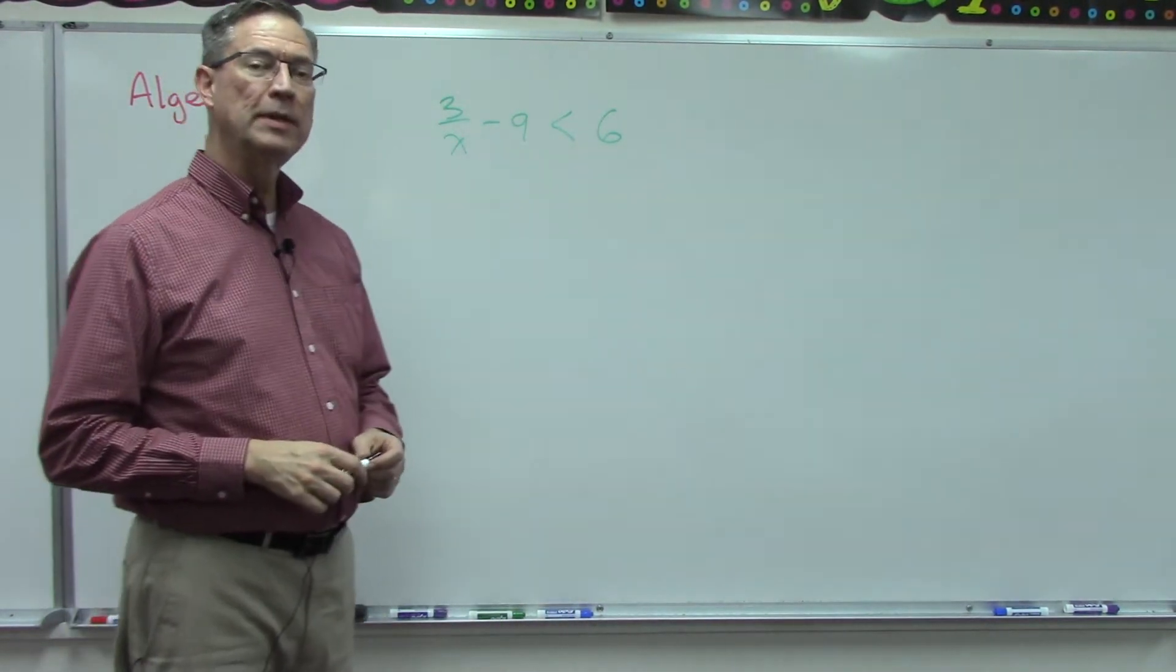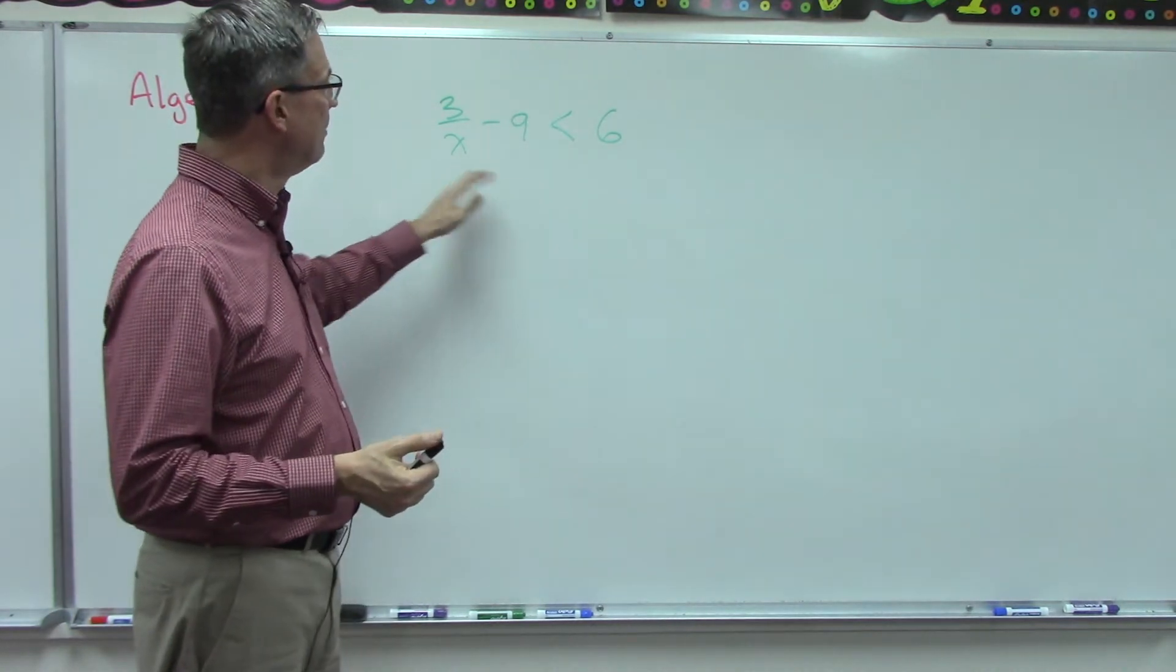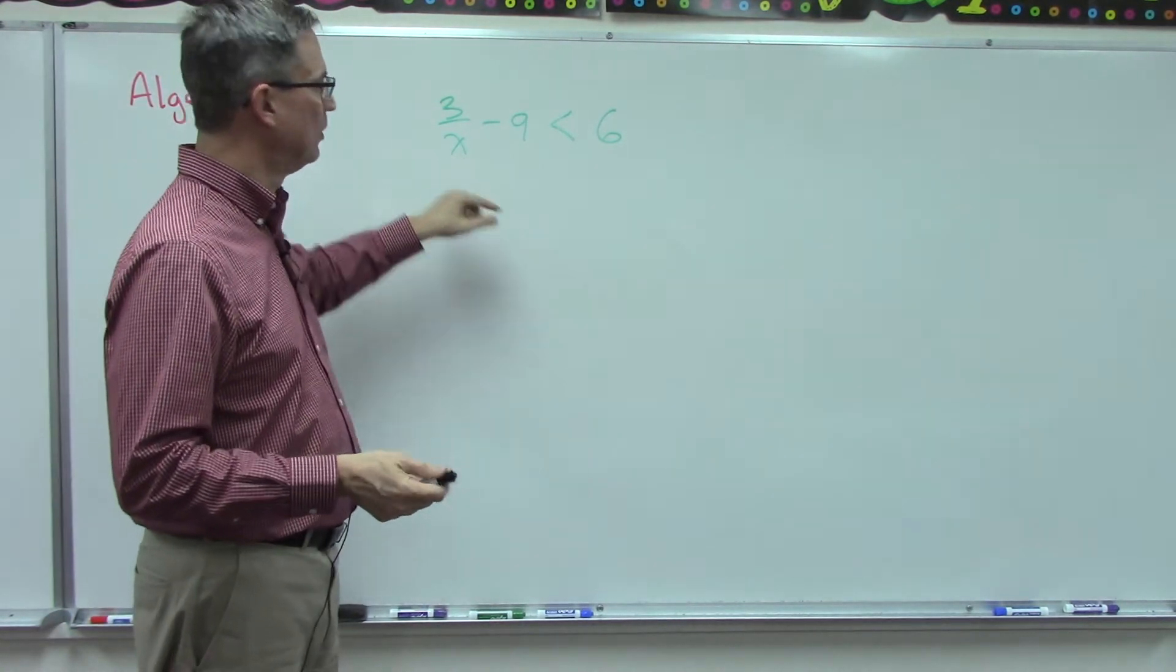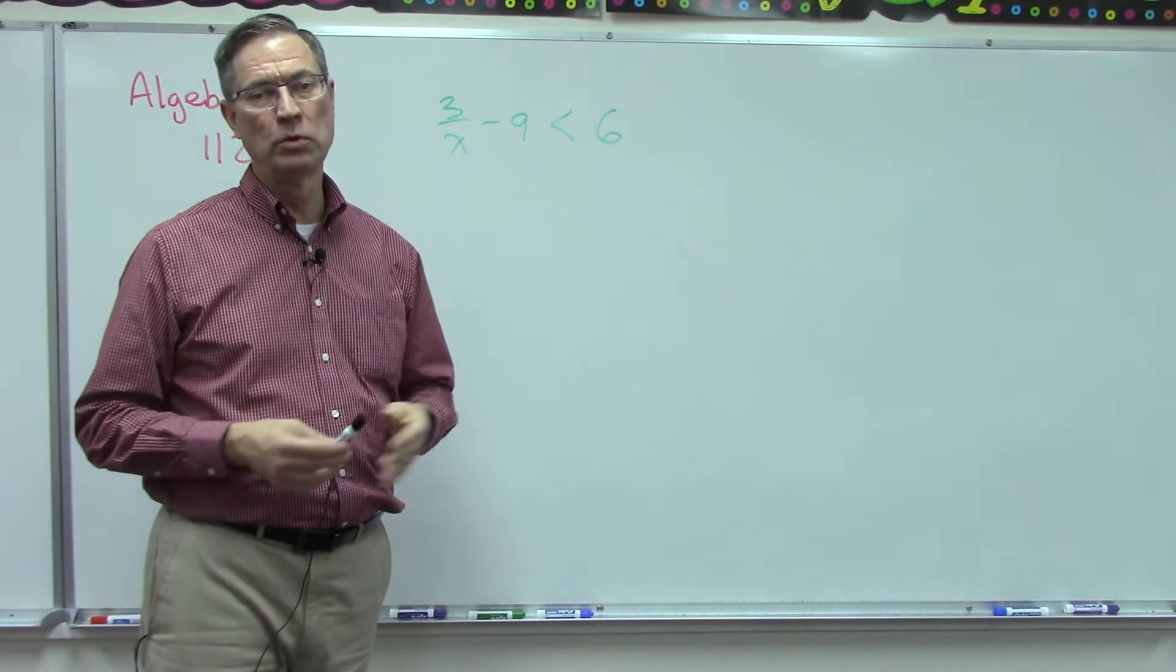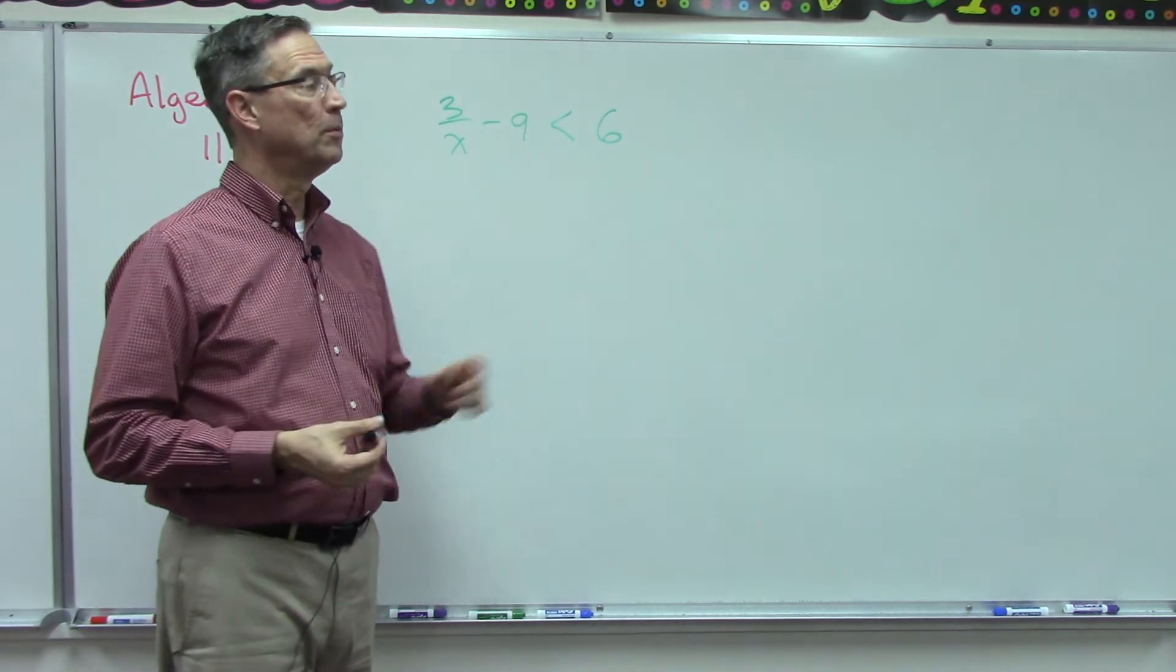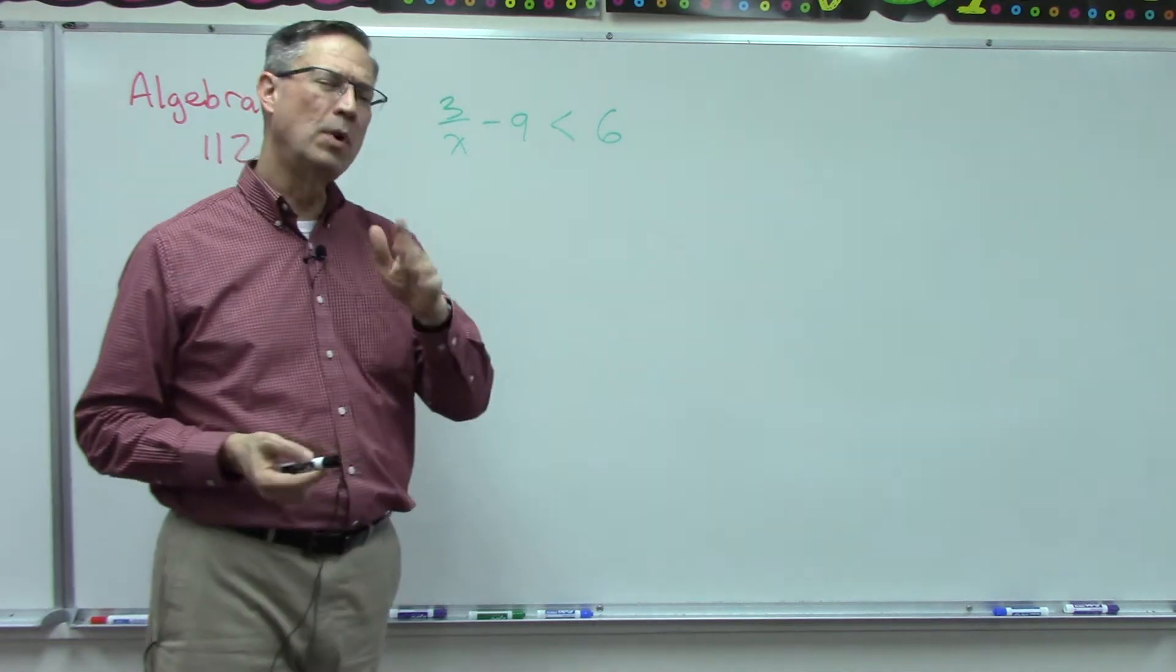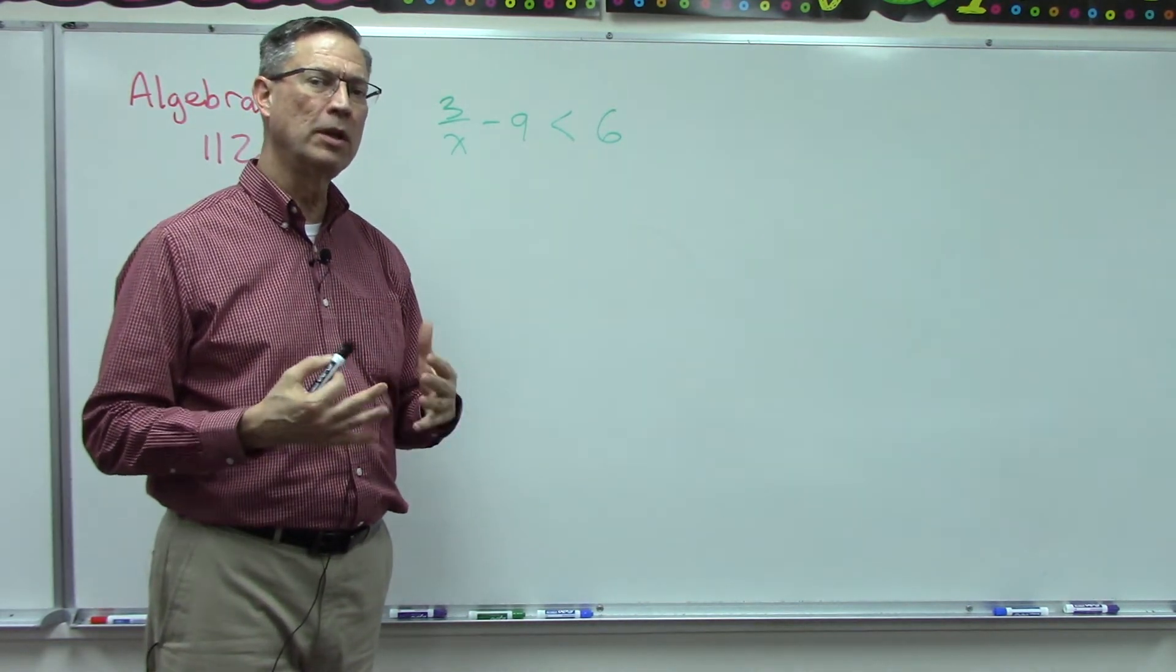All the other three problems that they give you have just numbers, so we don't have a variable in the denominator. This is the only one - problem number four - it's the only one that has a variable in the denominator. It's similar to one in examples, but let's get you started on it and then I'll let you finish it.